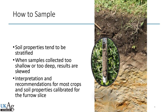The best way to collect a sample is with a soil probe, as shown in this image. It keeps the depth very consistent. When I collect samples, we bolt a little rubber donut onto the soil probe — similar to what you'd put on an air compressor hose — to keep our depth consistent, which is very important because soil properties tend to be stratified. When samples are collected too deep or too shallow, the results are skewed, and even being an inch off can have a big impact.